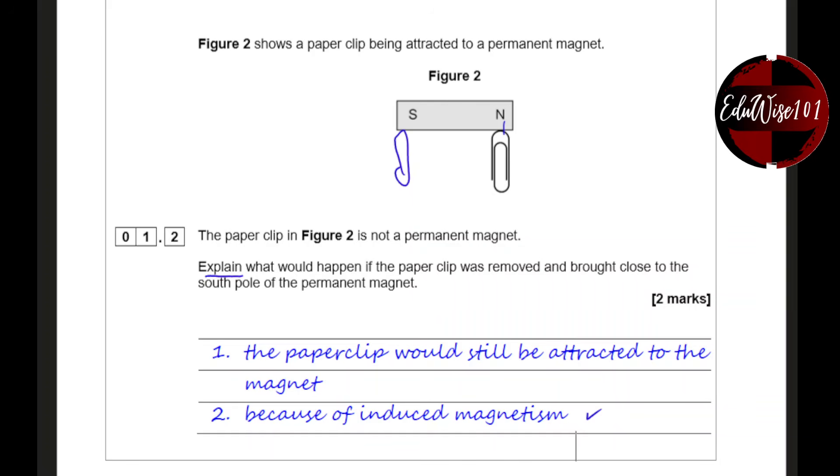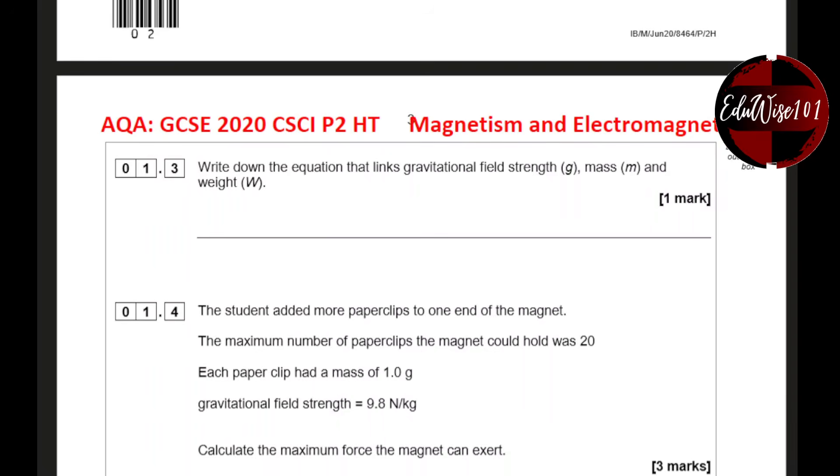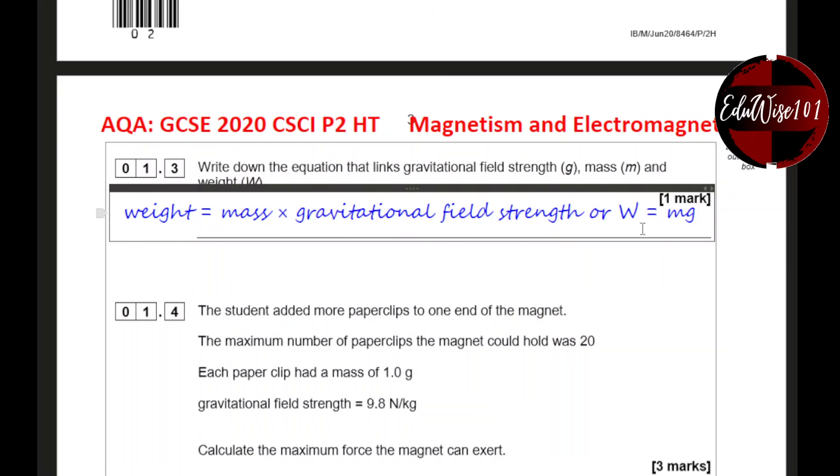The next part, question 1.3, write down the equation that links gravitational field strength g, mass m and weight W. You could use the equation sheet for this. The equation that links all three of these quantities is weight equals mass times gravitational field strength. You can write it as a word equation or even as a symbol equation as long as you write the symbols correctly, meaning that you don't mix up this lowercase m for a capital M.